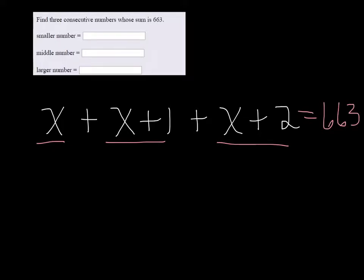Combining like terms, we get 3x plus 3 equals 663.